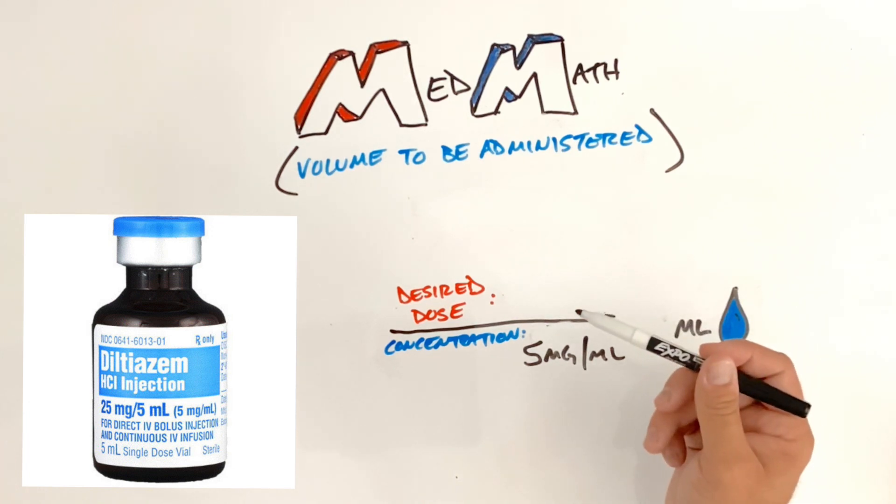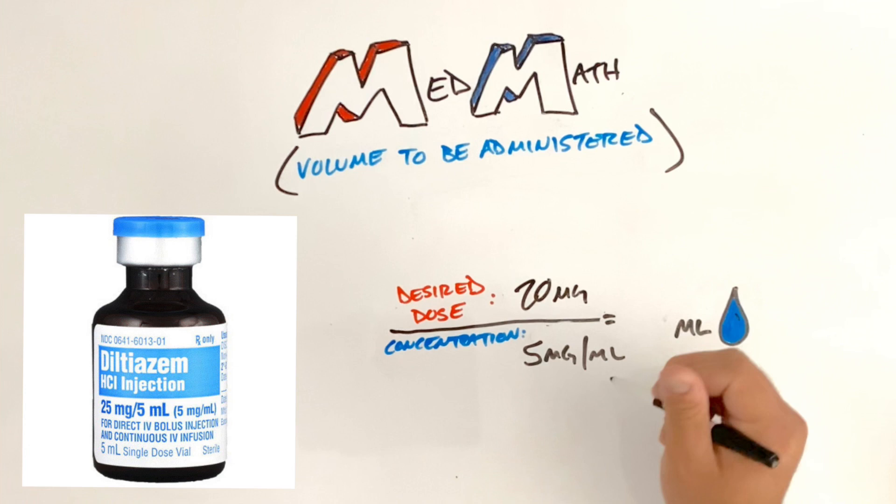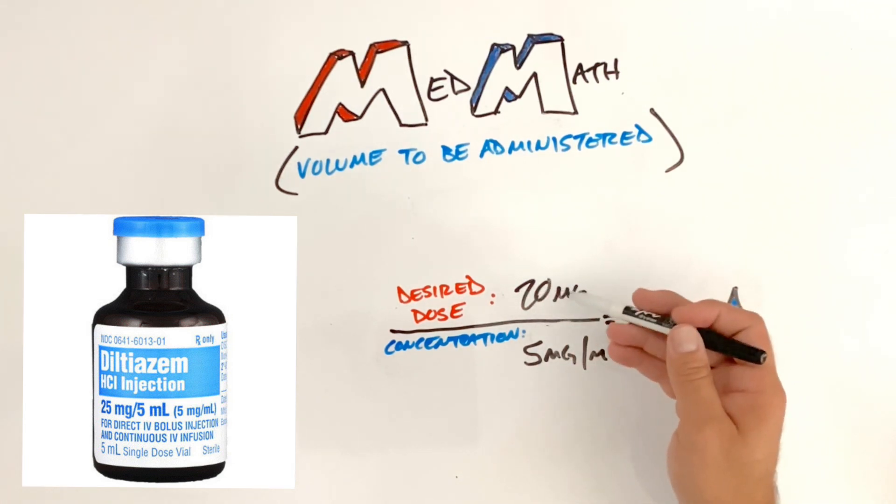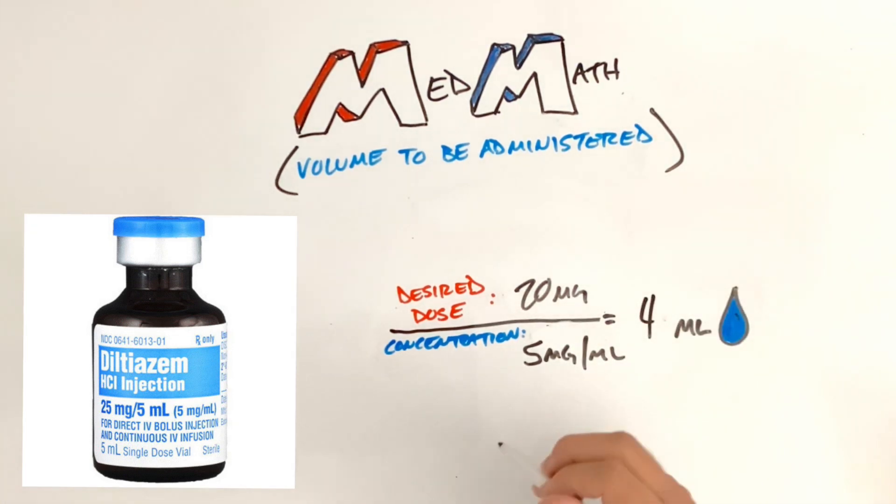So let's say our Cardizem dose is 20 milligrams. All I have to do is divide my 20 milligrams, which is my desired dose, by my 5 milligram per mL concentration. And that's going to give me 4 mLs is how much I'm drawing out of that vial. The key part of this is you always have to know what the concentration is in your medication.